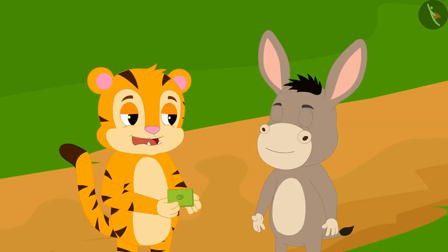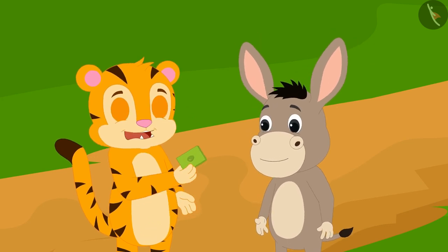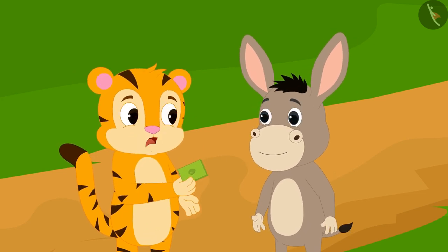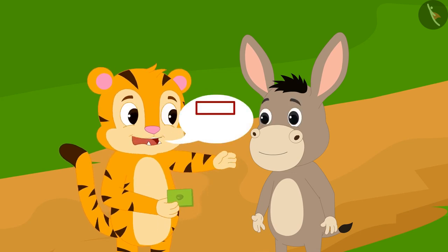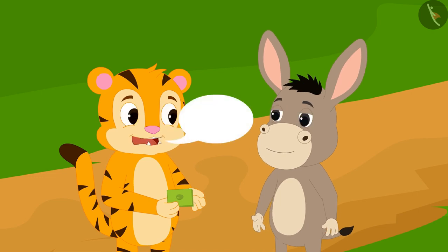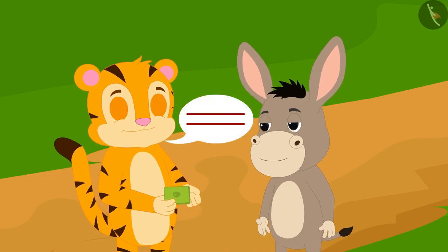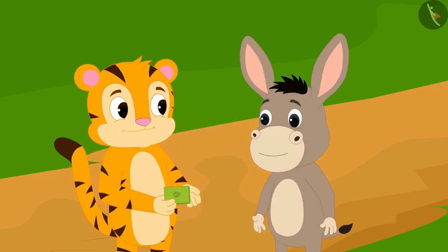Never mind, Bhoola. You won't be able to answer my second riddle. Can you divide this pistachio barfi into a rectangle and two equal area triangles by drawing two lines? Sher Khan asked Bhoola.